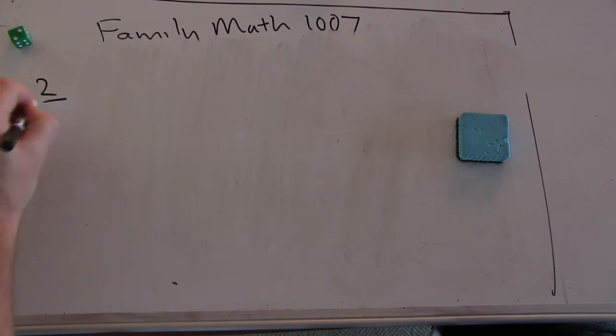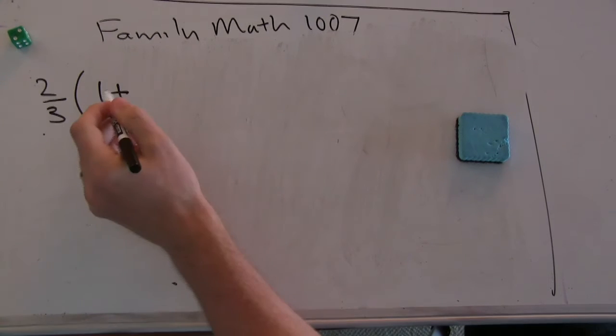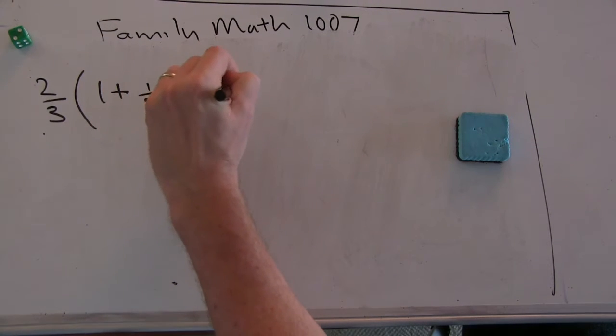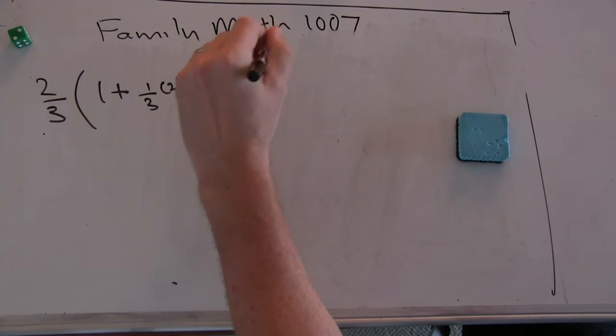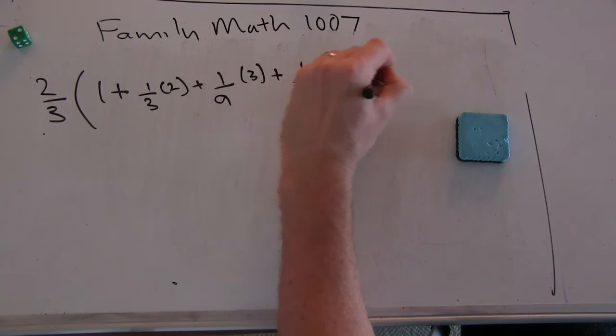So the series we were trying to look at was two-thirds times one, well, one times one, plus one-third times two, plus one-ninth times three, yeah, one-ninth times three, plus one over three cubed times four, plus et cetera.